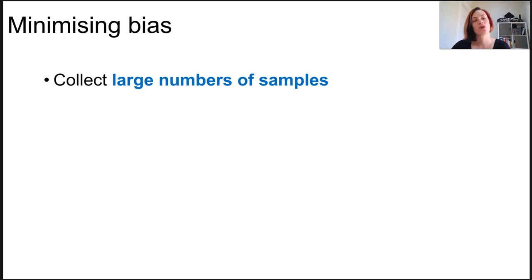To minimize bias, we want to collect large numbers of samples. The more samples, the more reliable the mean is, and therefore the more representative of the community.